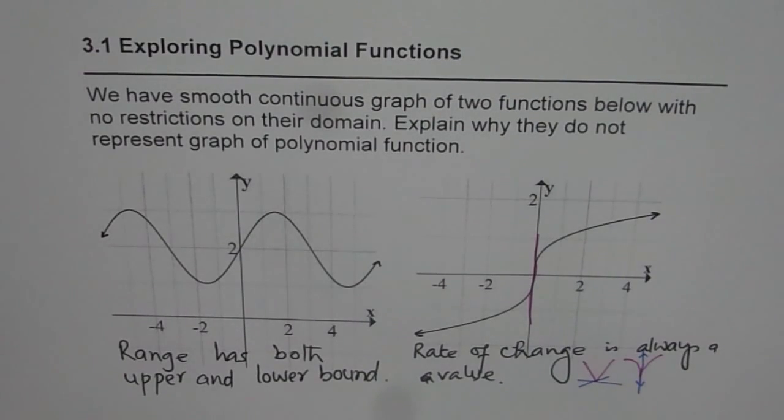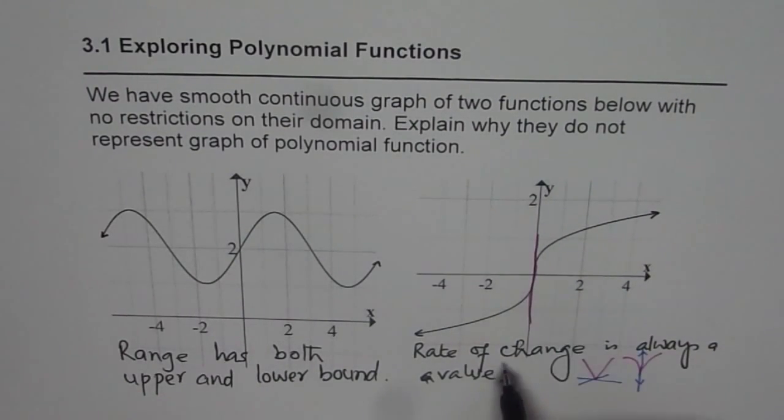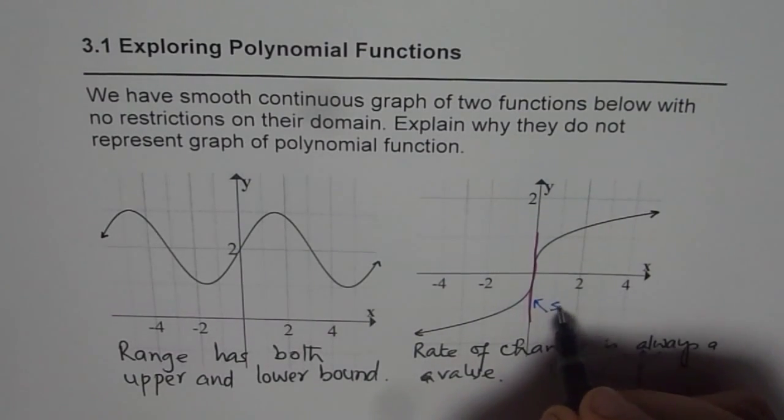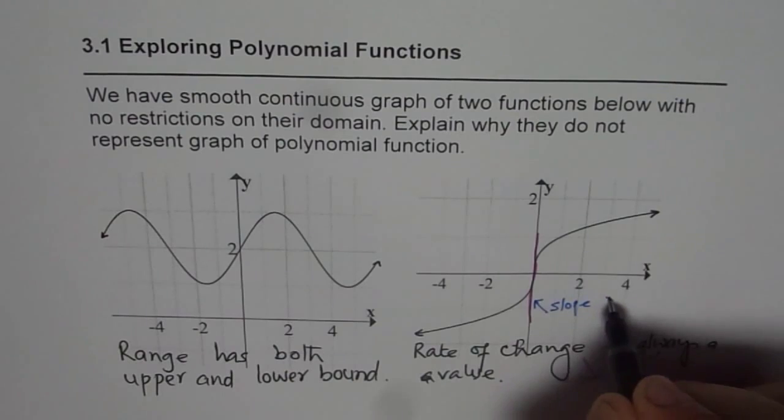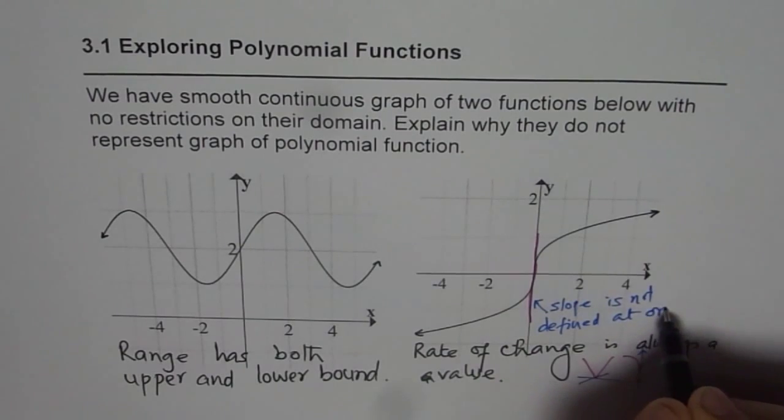Well, when you are given graph of a function, you have to find reasons from the graph. And the reason is that it has a vertical tangent at origin. So rate of change is not defined. So we say slope is not defined at origin.